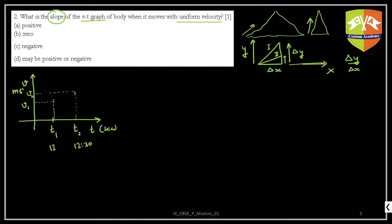If you join these two points, you can measure the slope. The vertical change is called delta v, and clearly delta v is nothing but v2 minus v1. The horizontal change is delta t, which equals t2 minus t1.